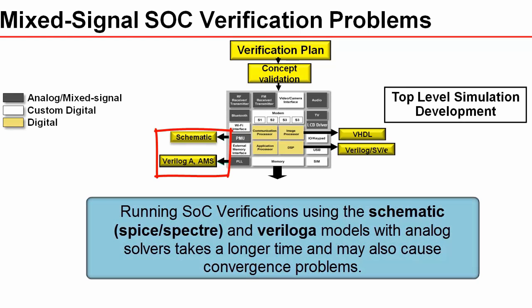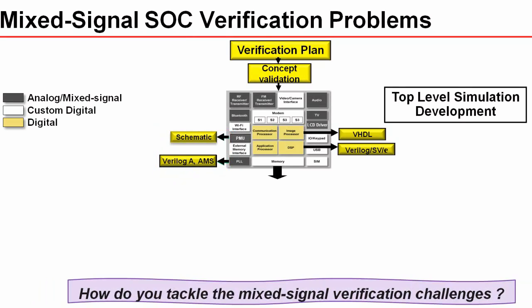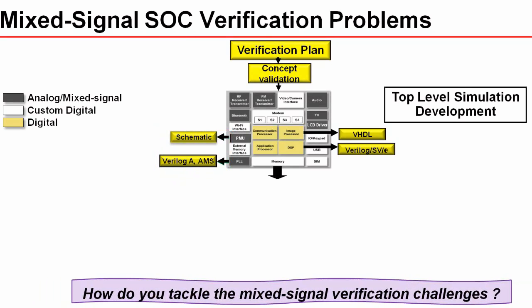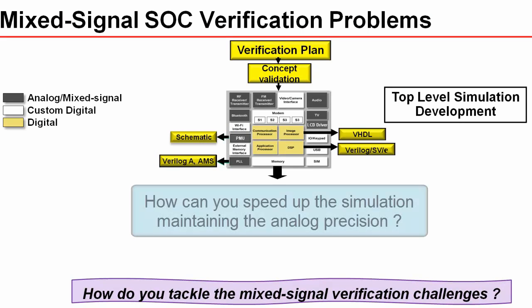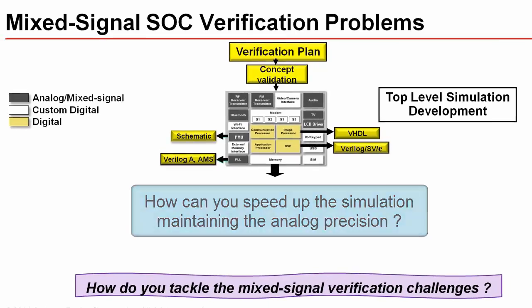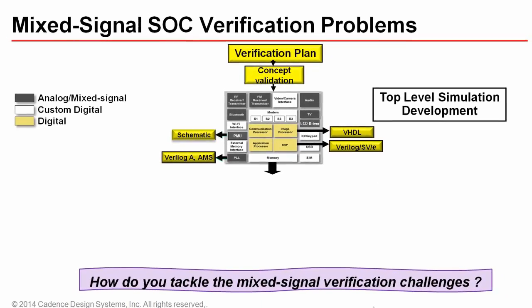Running top-level SOC verification using SPICE and Verilog-A models with analog solvers takes a longer time and may also cause convergence problems. So what can you do to solve this problem in full chip verification, and how can you speed up the simulation without losing the accuracy of analog circuits?